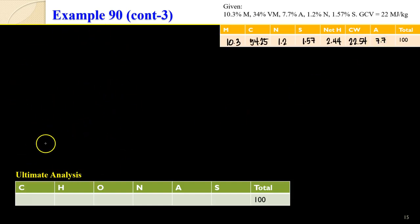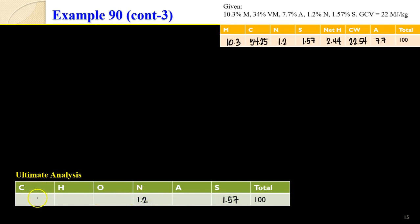Now for the ultimate analysis (letter C), it's organized as CHONS — carbon, hydrogen, oxygen, nitrogen, ash, and sulfur. Sulfur is 1.57%, nitrogen is 1.2%, carbon is 54.25%, and ash is 7.7%. Our remaining unknowns are hydrogen and oxygen.